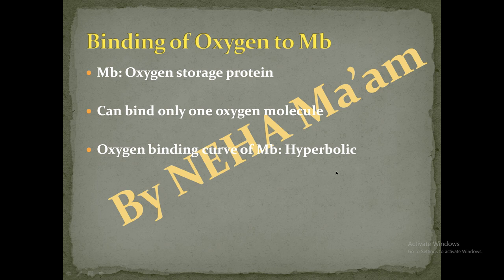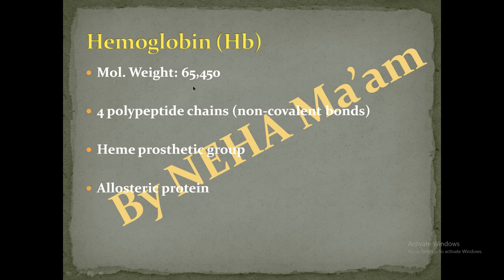If we talk about hemoglobin, the molecular weight of hemoglobin is 65,450. There are 4 polypeptide chains, so hemoglobin is considered a quaternary structure protein. These 4 polypeptide chains are held together through non-covalent bonds. Hemoglobin also has a heme group that acts as a prosthetic group — meaning it is a tightly bound non-protein component of the structure.